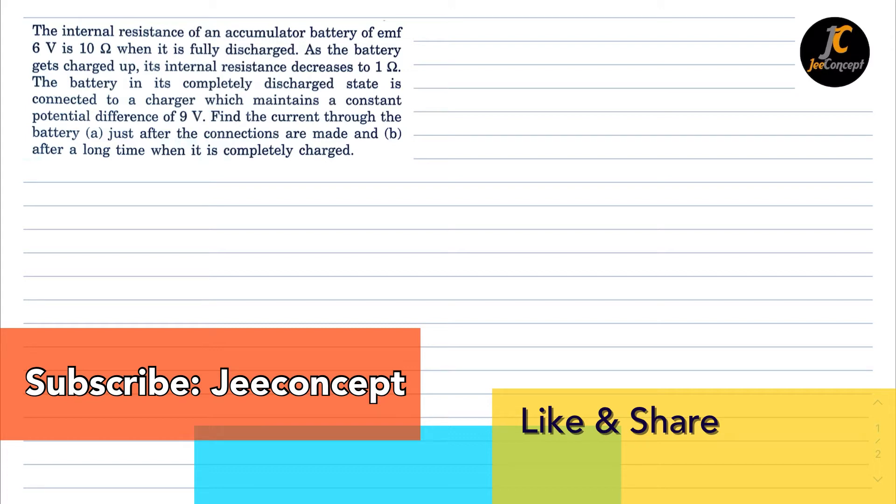its internal resistance decreases to 1 ohm. The battery in its completely discharged state is connected to a charger which maintains a constant potential difference of 9 volt. We have to find the current through the battery in two different scenarios: just after the connections are made, and after a long time when it is completely charged.